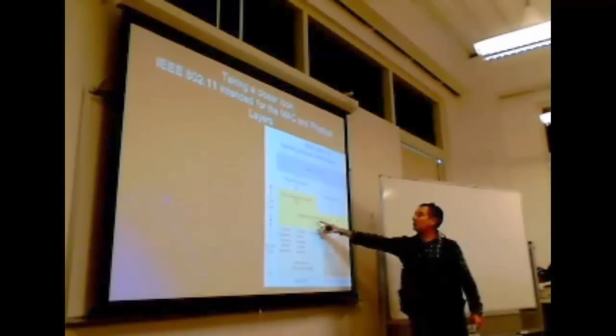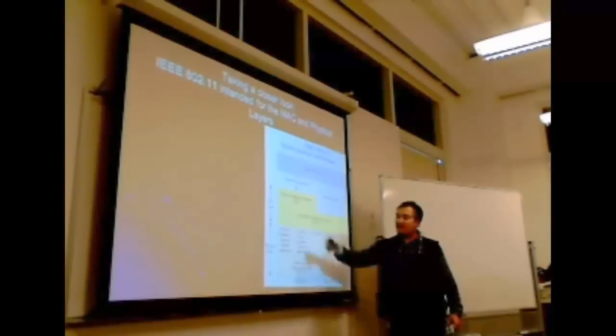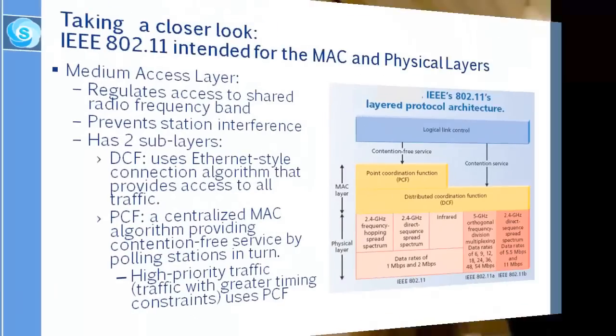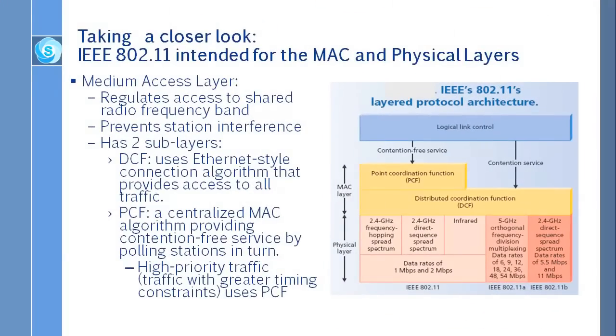And then when we come to this distributed coordinated function DCF and PCF. Let's have a look from here. In the medium access control, we have physically the frequency division bands. Right here. And other details of the radio transmission. But for the medium access control, when we come to MAC, it has two sublayers: DCF and PCF.